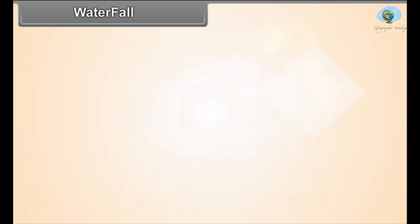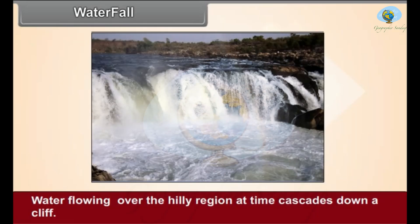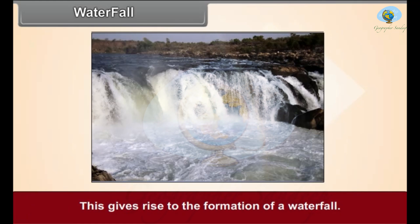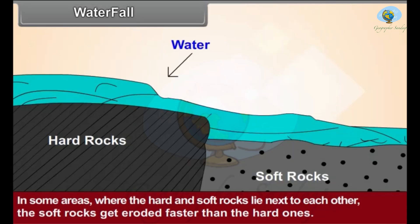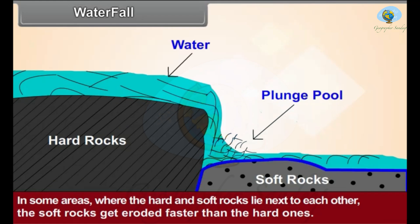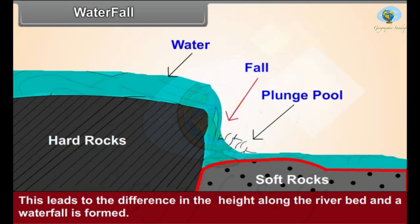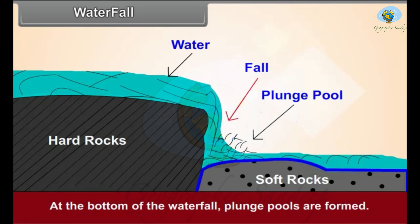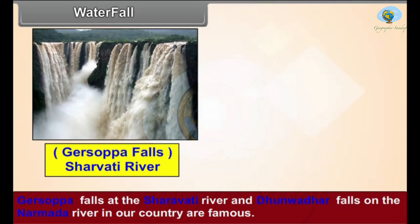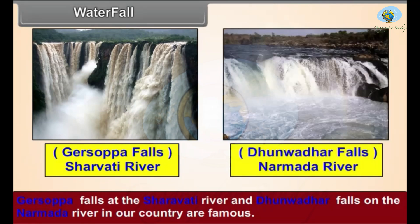Waterfalls: In some areas where hard and soft rocks lie next to each other, the soft rocks get eroded faster than the hard ones. This leads to a difference in height along the river bed and a waterfall is formed. At the bottom of the waterfall, plunge pools are formed. Garsappa Falls on the Sharavathi River and Dhuandhar Falls on the Narmada River in our country are famous examples.